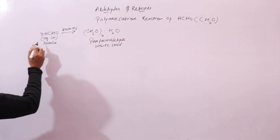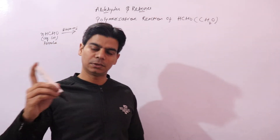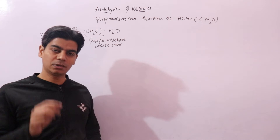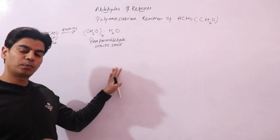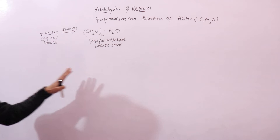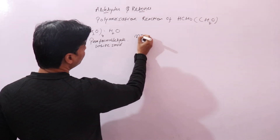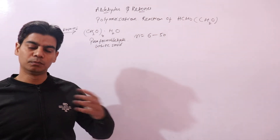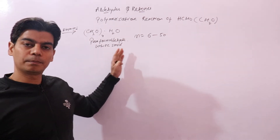Now if we take the aqueous solution of formaldehyde and add concentrated sulfuric acid to it, a different reaction takes place. The polymer that forms is polyoxymethylene, where N is equal to 6 to 50. In this case, more molecules of formaldehyde undergo polymerization to give polyoxymethylene.